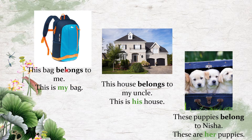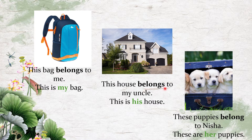Look at these three examples — look at the pictures and then look at the sentences. 'This bag belongs to me' — a better way of saying that is 'this is my bag.' 'This house belongs to my uncle' becomes 'this is his house.' 'These puppies belong to Nisha' becomes 'these are her puppies.' So instead of using the word 'belong,' you use words like my, his, her, your to make your sentence shorter and crisper — especially sentences showing belonging or possession.